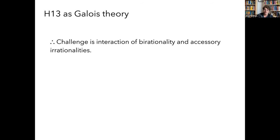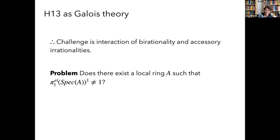Summarizing: the challenge is getting the bi-rational problem and the accessory rationalities both in play simultaneously — what techniques can survive both? As an intermediate problem, one can ask: is there a local ring such that this filtration is non-trivial on its étale pi one? I think yes, but I haven't managed to write a proof. Hilbert's problem is: does there exist a field where this filtration is non-trivial? The local ring version is a good intermediate problem. If you prove it no, you've solved Hilbert's problem; if yes, maybe you've invented techniques that get us closer.